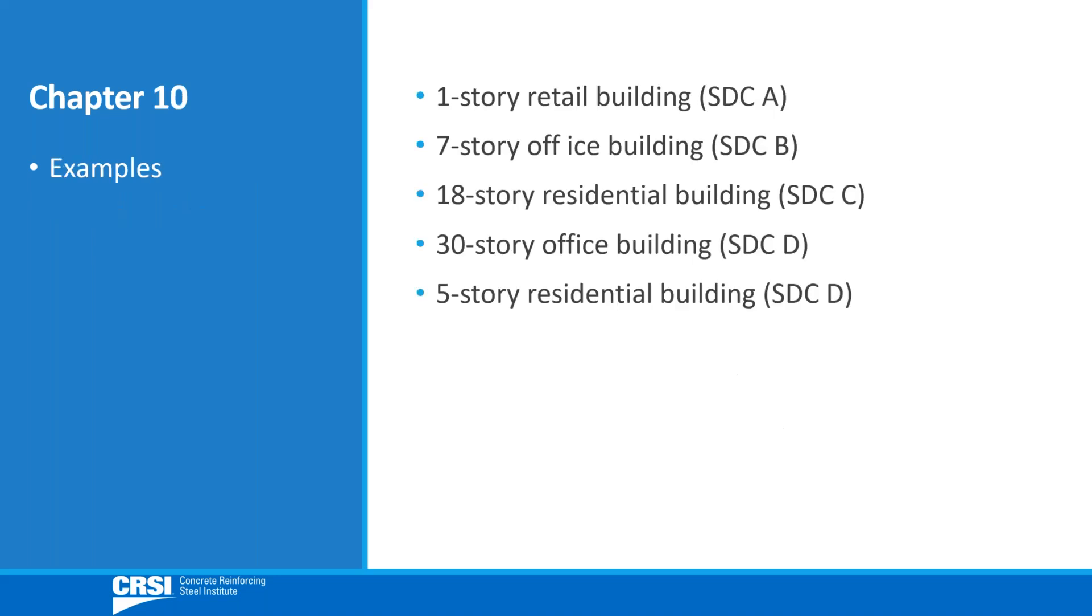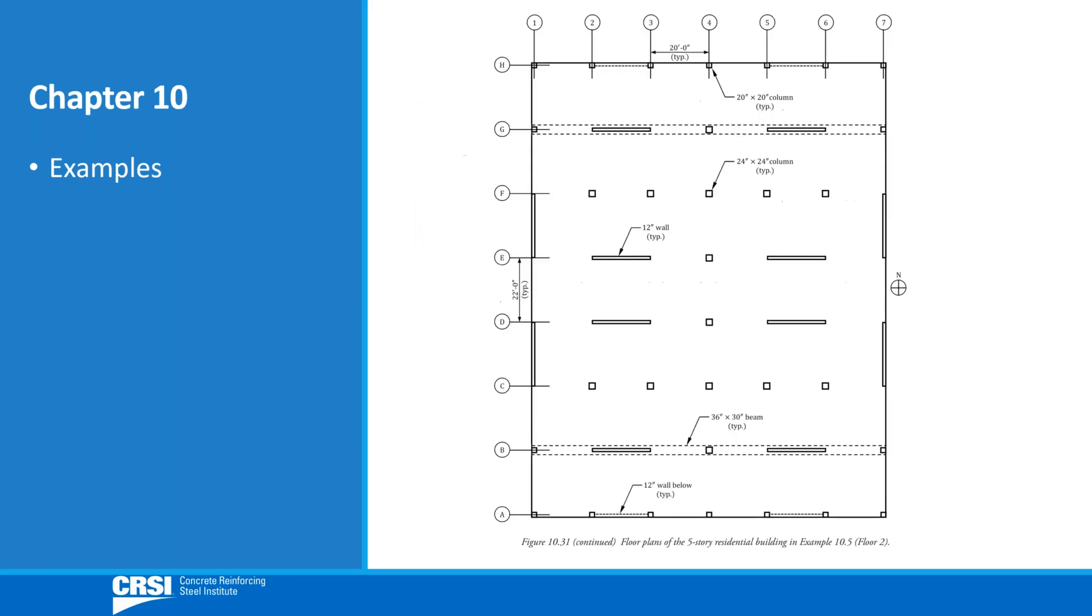Five completely worked out design examples are given in Chapter 10 that illustrate the proper design and detailing of reinforced concrete diaphragms based on the code prescribed requirements for seismic design categories A through D. The example for the five-story residential building illustrated here provides the complete design and detailing of a semi-rigid diaphragm for transfer forces in a structure with a horizontal structural irregularity assigned to seismic design category D.